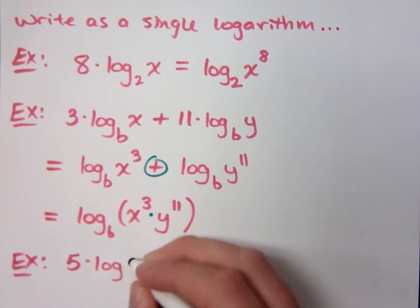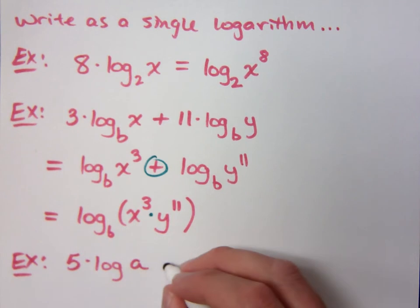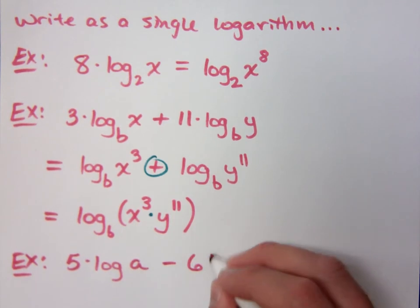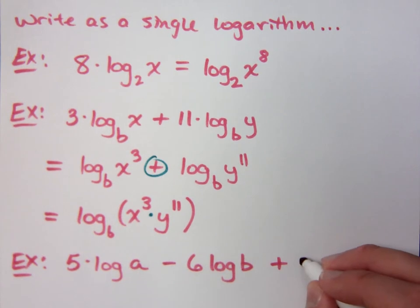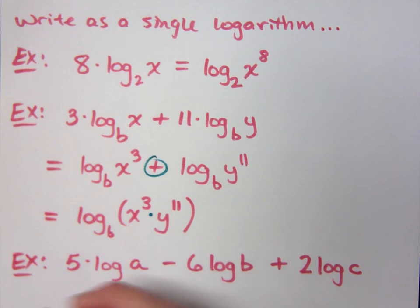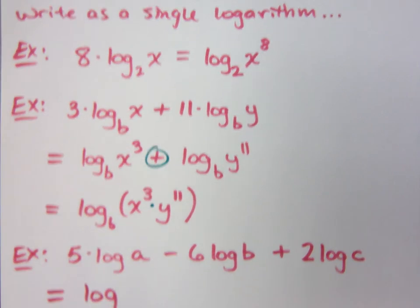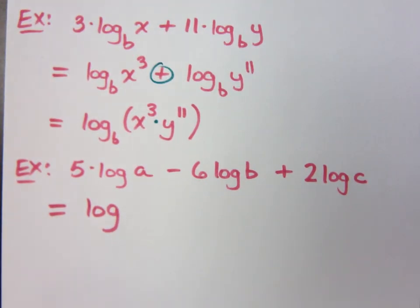5 log of a minus 6 log of b plus 2 log c. Write this as 1 log. Can you go straight to the answer? What's inside the log?